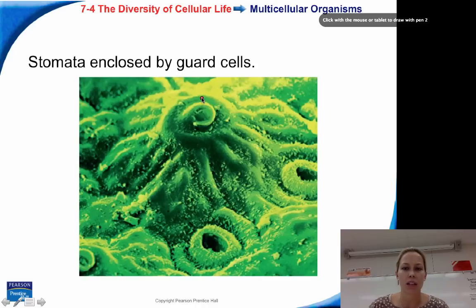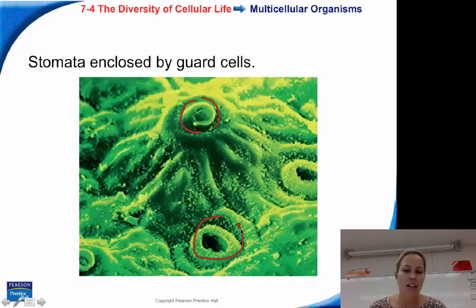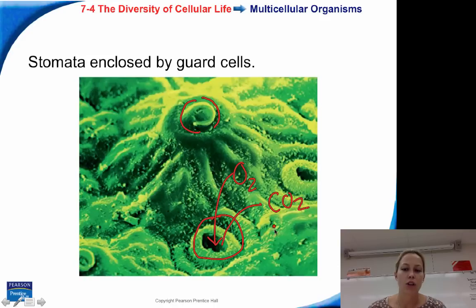Here we can see guard cells that are closed, and right here is a stomata where the guard cells are actually open. So here we have that pore, and that pore is where oxygen enters, and carbon dioxide (CO2) and water vapor (H2O) leave. These specialized cells are known as guard cells, and they regulate how much oxygen, carbon dioxide, and water is getting into or out of the plant.